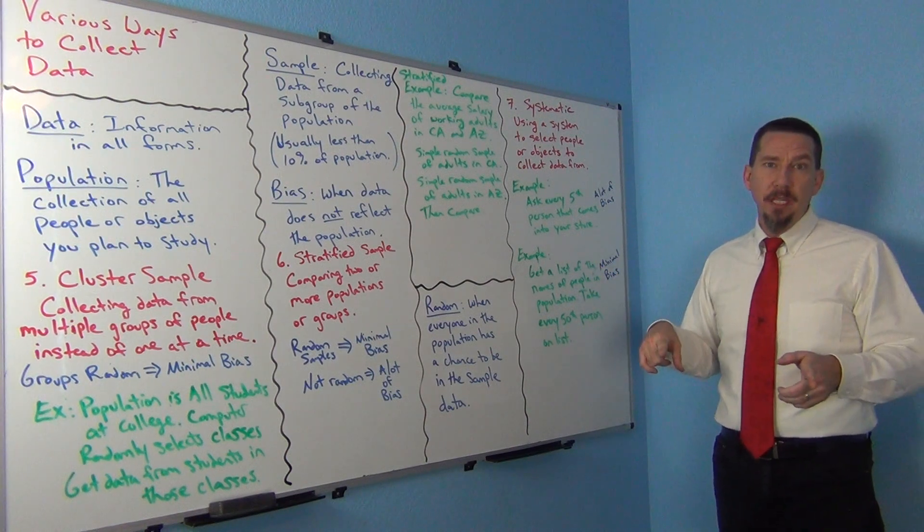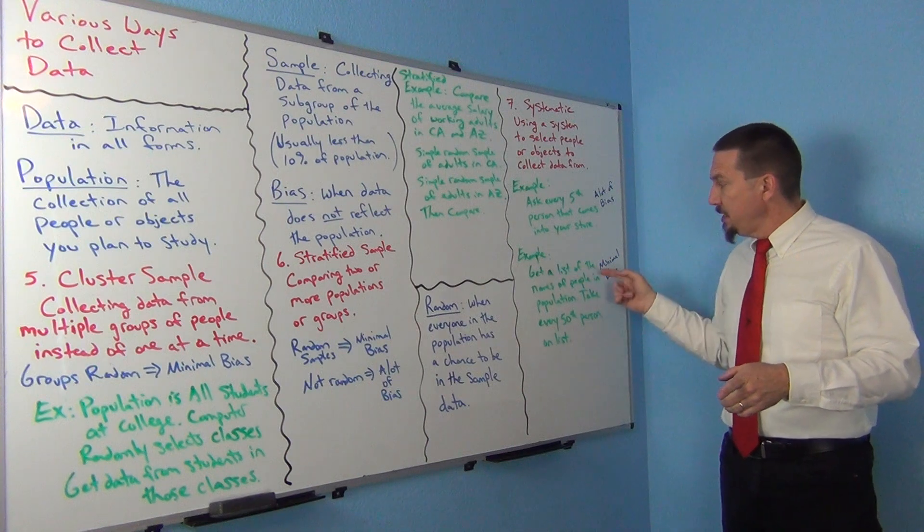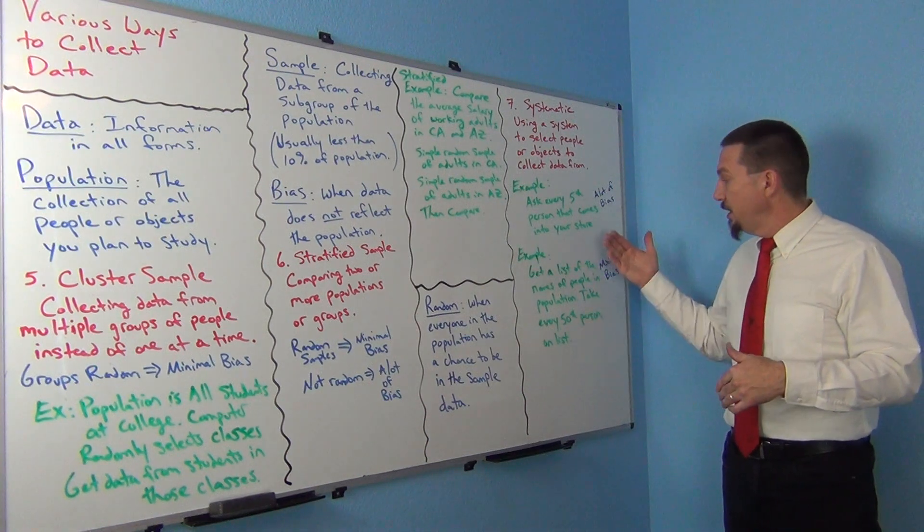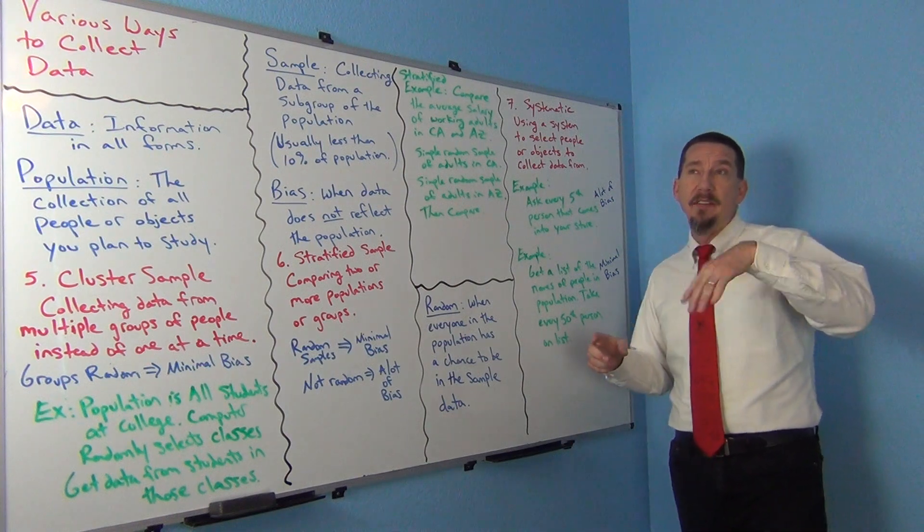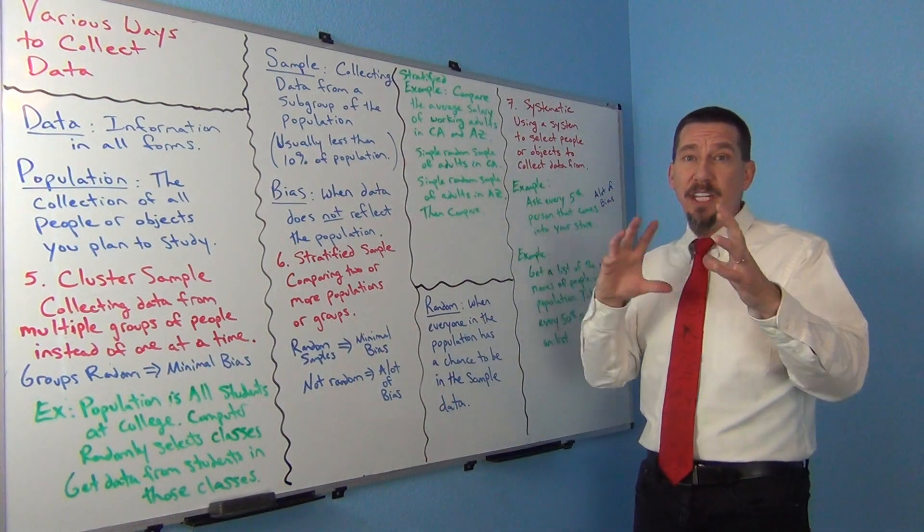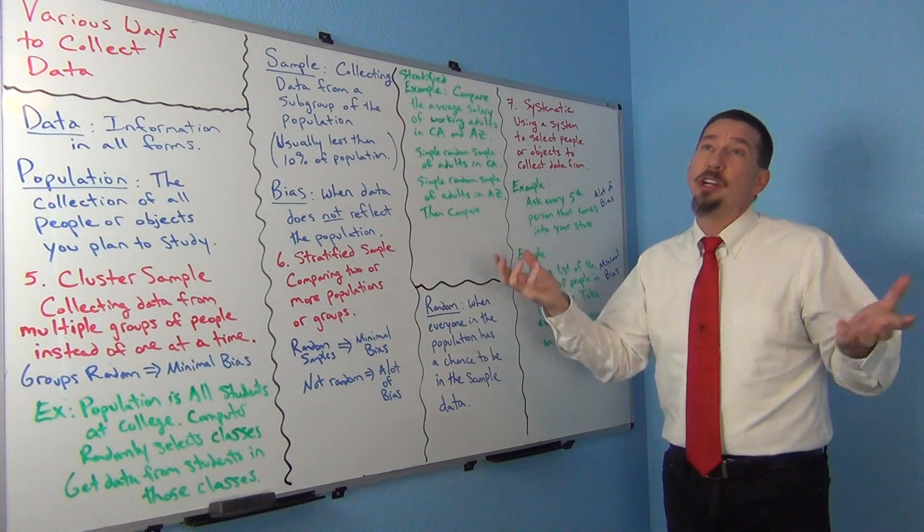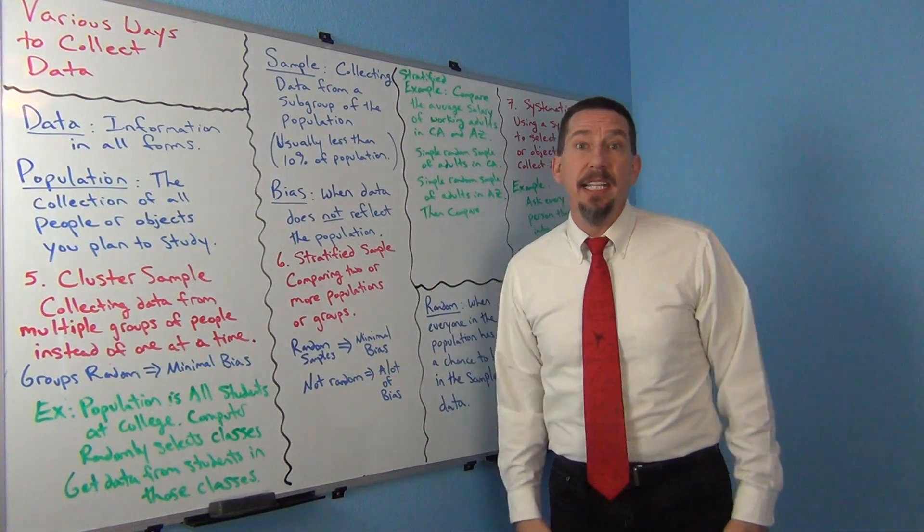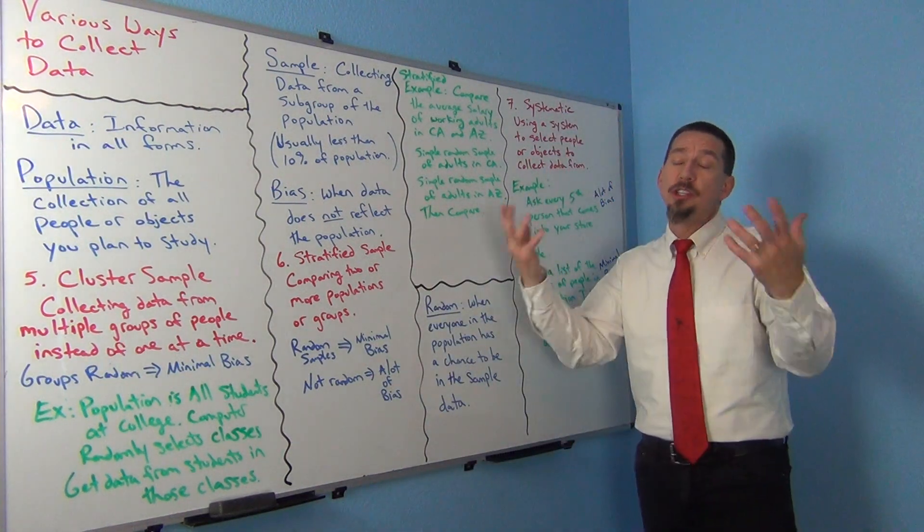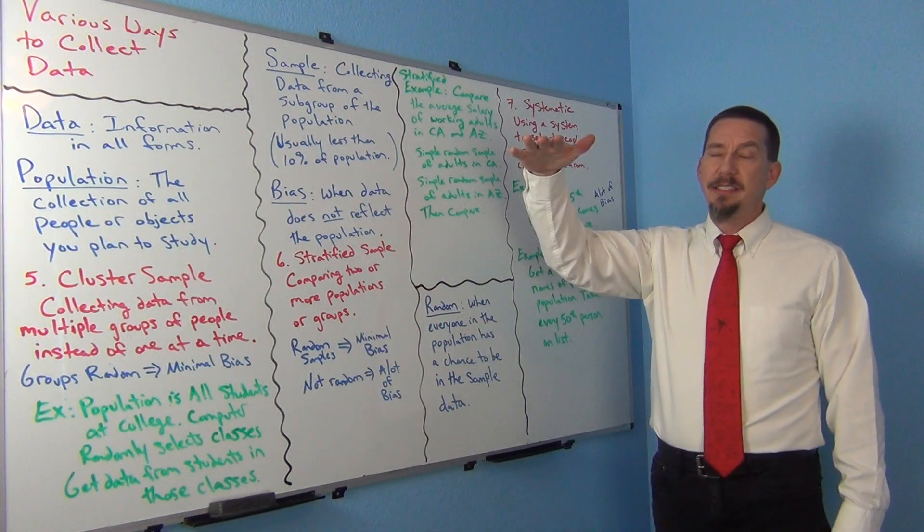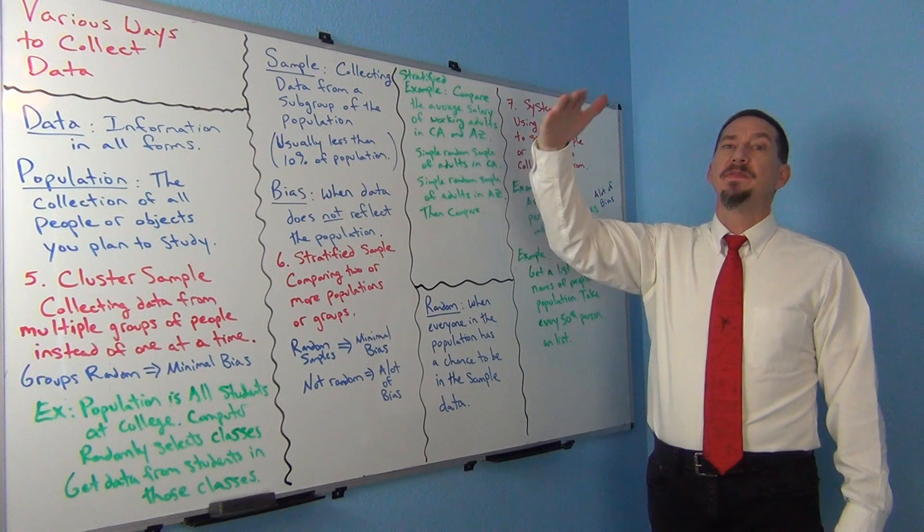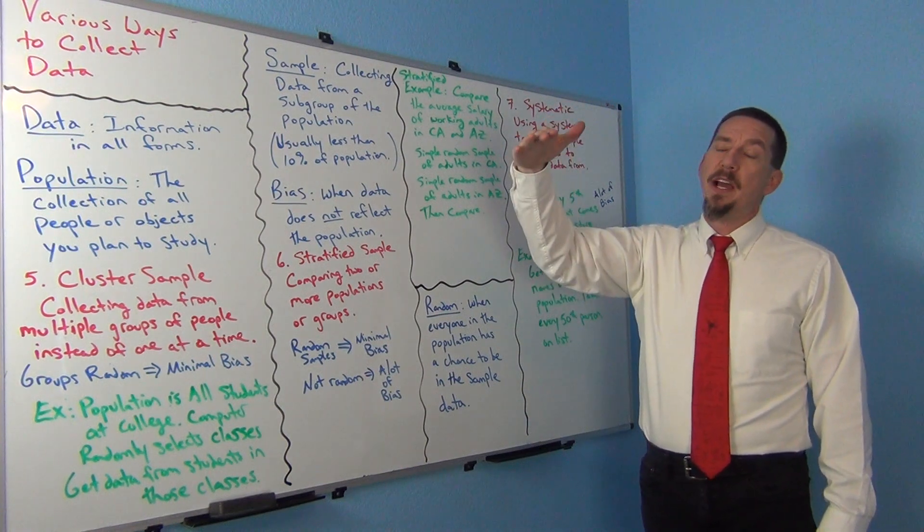But sometimes you'll see people actually randomize the first choice before they do the system. So a very common thing that you'll see data miners and others and data scientists do sometimes is they'll have a computer randomly select a number between 1 and 50. So let's suppose they chose 17. They chose the, the computer chose 17. So they would go to the 17th person on the list and then they would go every 50 from there. So they would go 17, 67, 117, 167 and so on.